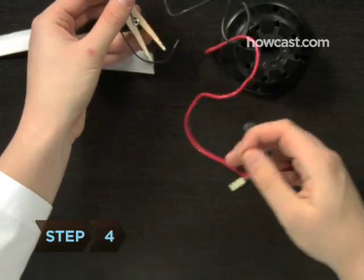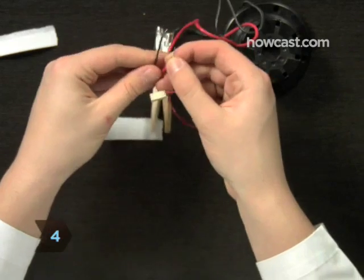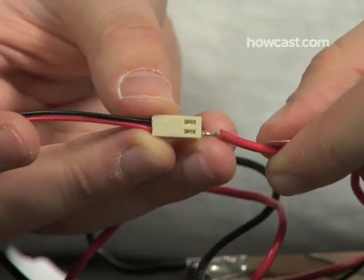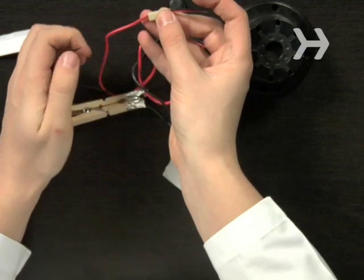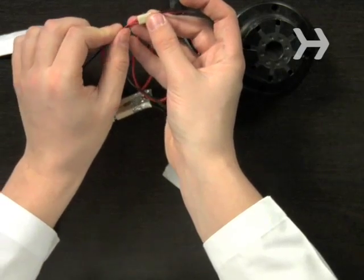Step 4. Locate the wire leading from the positive pole of the noise maker and connect it to the battery holder. Now do the same with the remaining black wire coming from the clothespin.